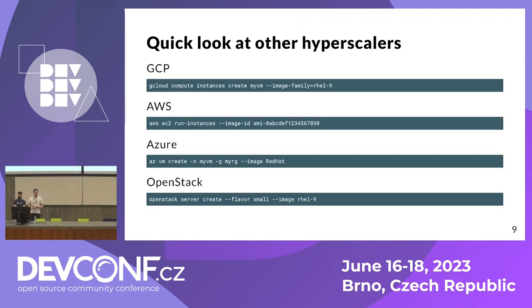Let's also have a look at other hyperscalers — what do others do? Whether it's GCP, AWS, Azure, or OpenStack, if you look at their command lines, they're all pretty similar. All you need to create a running virtual machine is just an image, and everything else is derived from this image. We thought this was a quite nice user experience and that KubeVirt should have something similar.